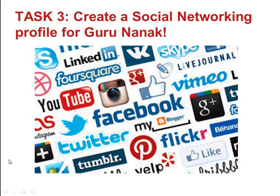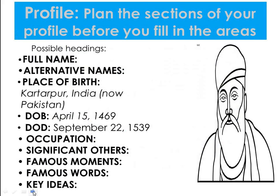For task three, you're going to create a social networking profile for Guru Nanak — imagine he's going on Facebook, Twitter, or Instagram and you're creating his profile. Plan the sections before you fill in the areas: full name, alternative names, place of birth, date of birth, date of death, occupation (what job did he have?), significant others (did he have a wife or children?), famous moments, famous words, and key ideas — so what were his beliefs and what was he trying to teach people?